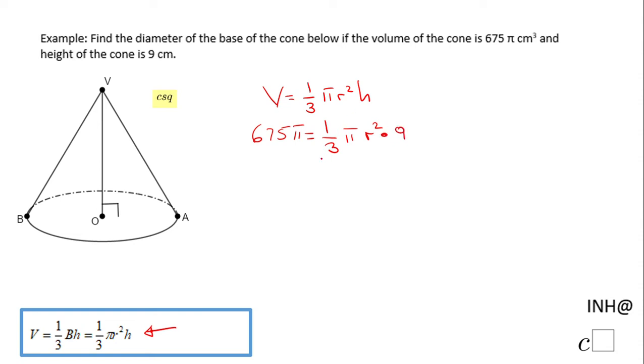So the first thing I can do here is to simplify. This 3 goes in 9 three times, so I'm gonna have 675π equals πr² times 3. And also if you notice, another good simplification will be these two π's cancel out. So we have here an equation: 3r² equals 675. I'm gonna solve for r².